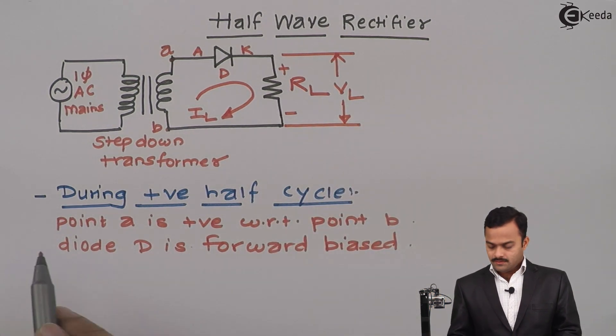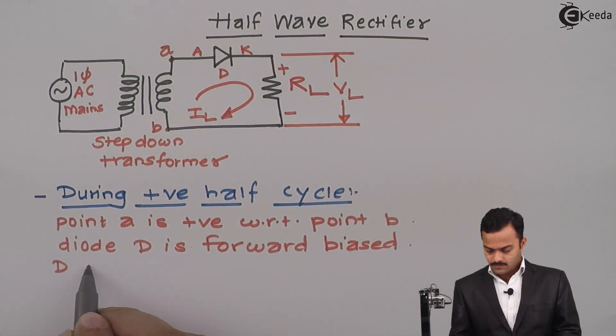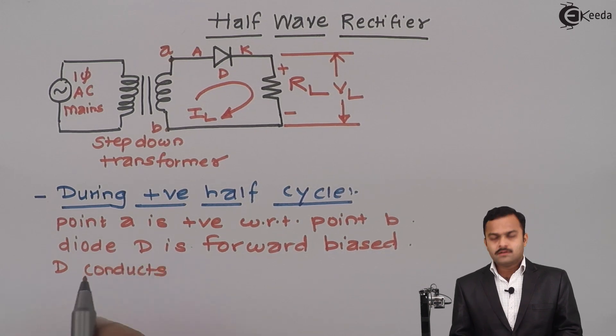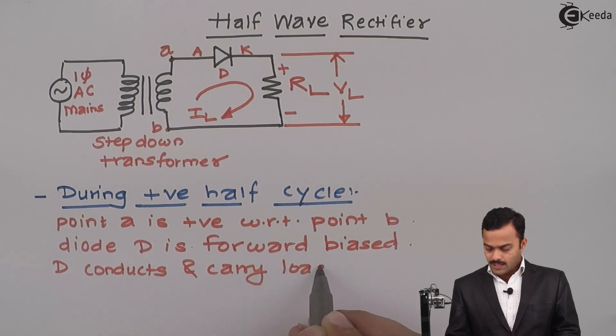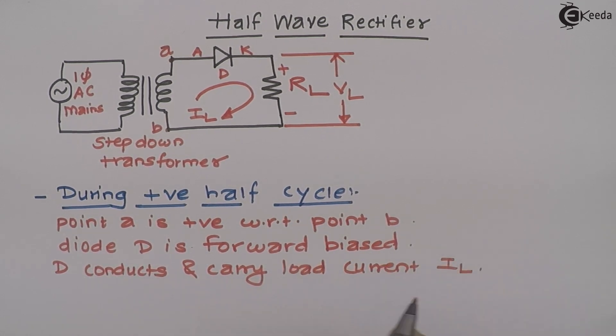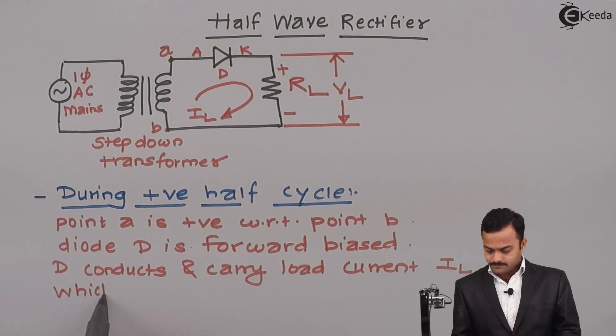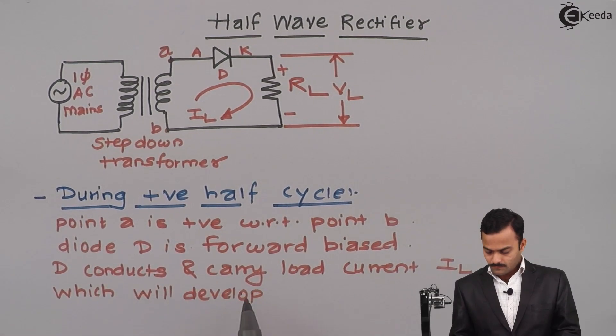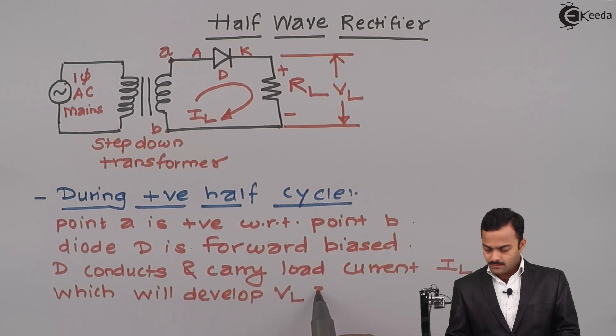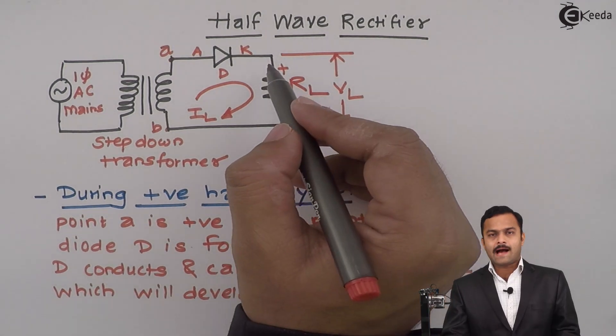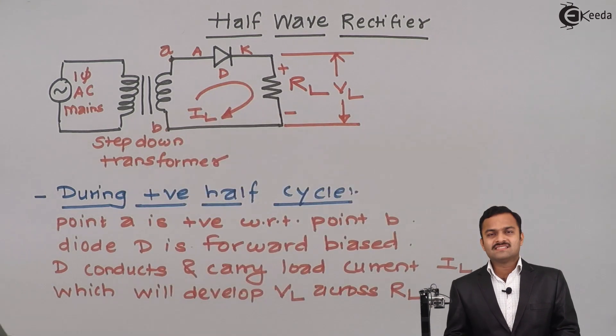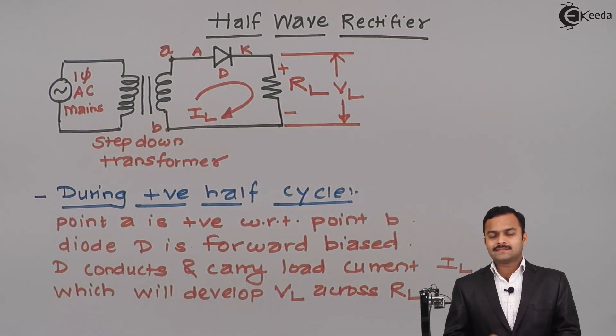So what happens when diode D is forward biased? Diode D conducts and carries load current IL, which will develop load voltage VL across load resistance RL, and that voltage is approximately the same as the supply voltage. Now let's see what happens during the negative half cycle.